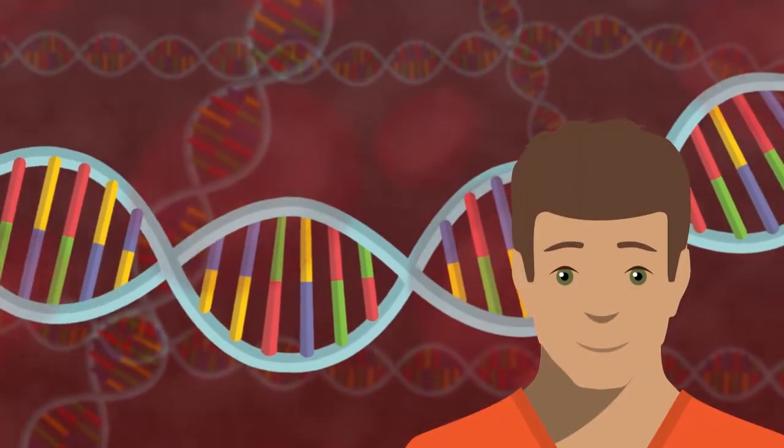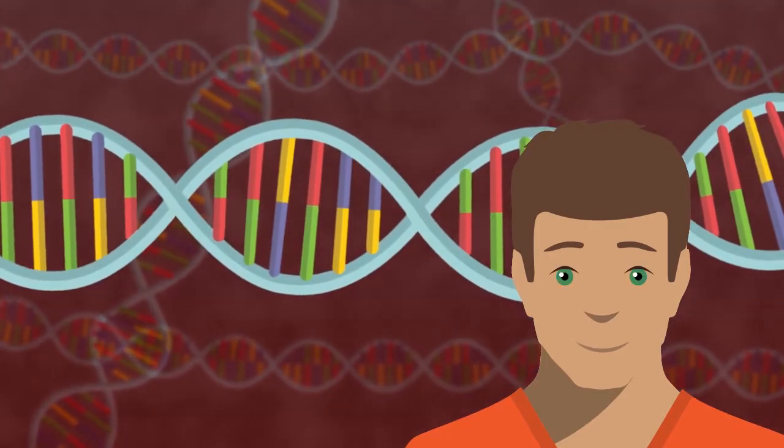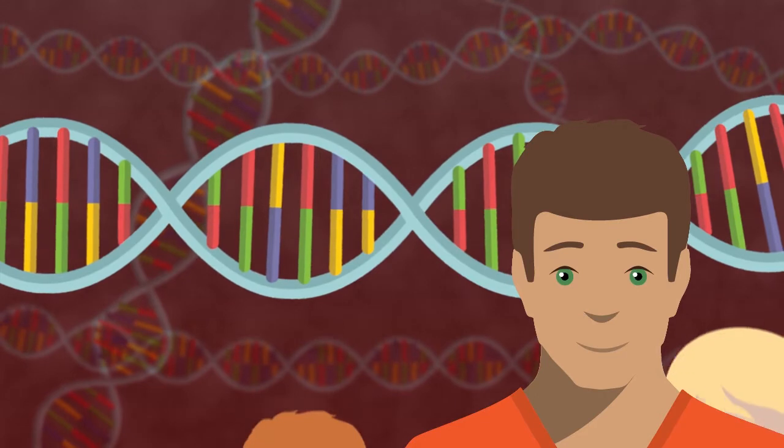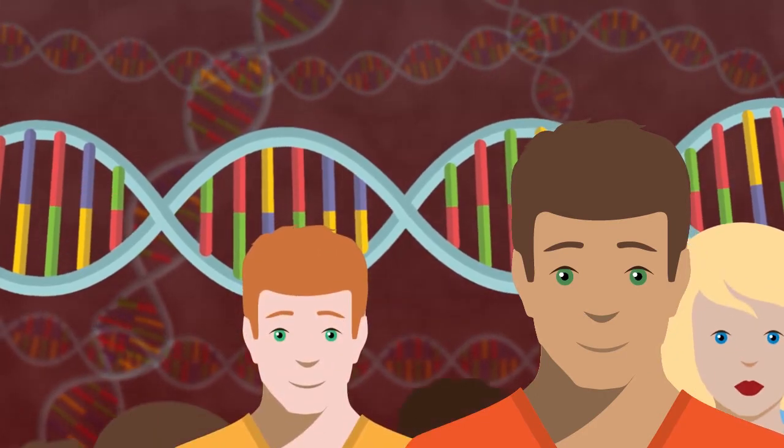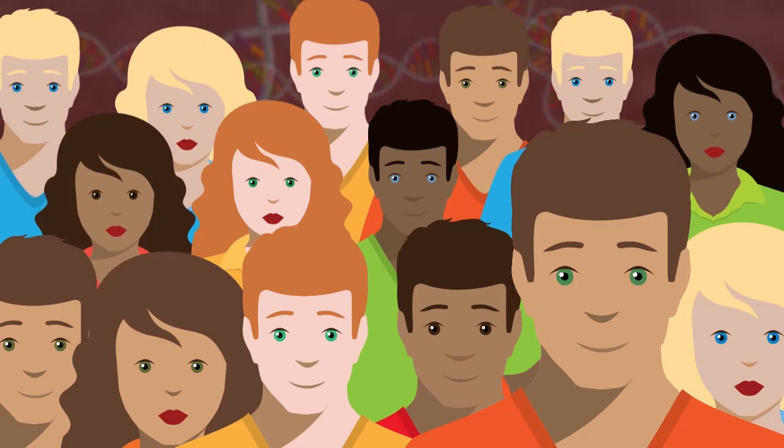Sometimes, DNA can change, creating new and different versions of a gene. This is called a gene mutation. These mutations mean that different individuals can carry different versions of the same gene. Different eye colour is one example of this.